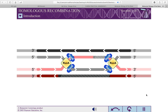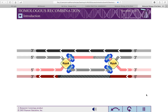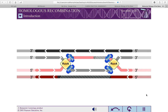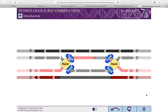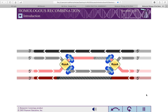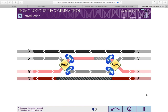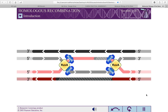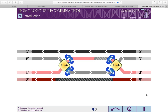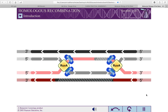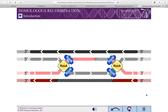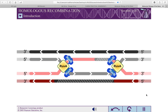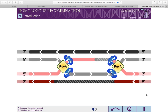Homologous recombination is the exchange of similar DNA sequences between different DNA molecules. Cells use homologous recombination to introduce genetic variation, as well as to repair damaged DNA.